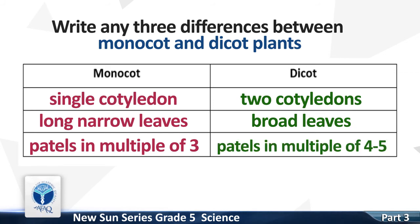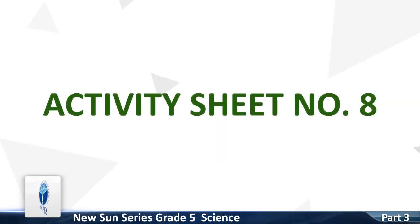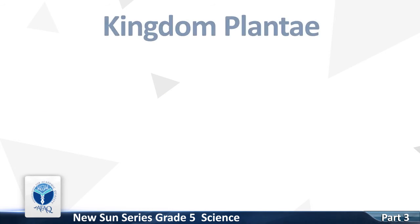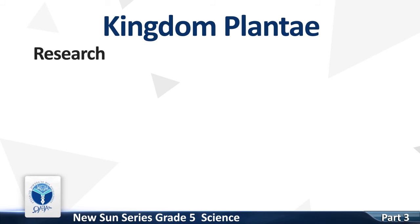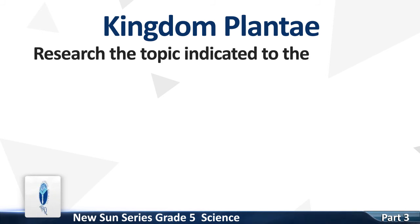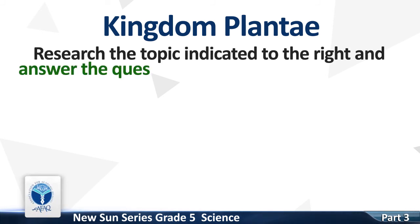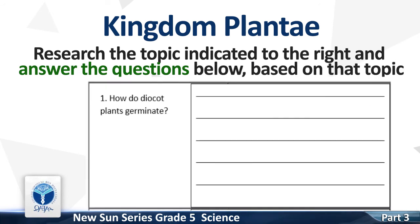Dicot: petals in multiples of four or five. Activity sheet number 8. Kingdom Plantae — do the research. Research the topic indicated and answer the question below. Topic: monocot versus dicot.